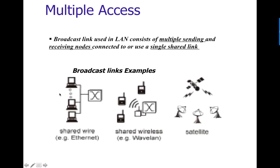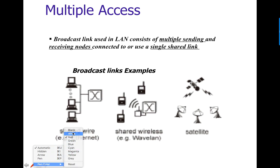We have different scenarios. We have machines sharing a wired link — this is a wired network. We also have mobile devices sharing the same airspace — they are still sharing the medium. And another wireless example: three transceivers that can send and receive, all communicating with the same satellite — they are sharing the communication to the satellite. In all three examples, we have multiple access — more than one device communicating at the same time.